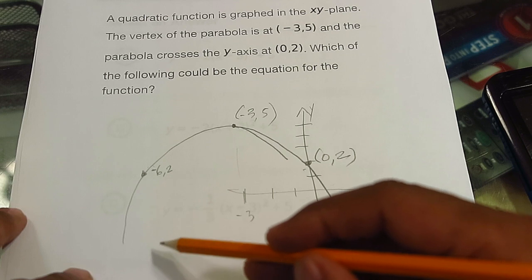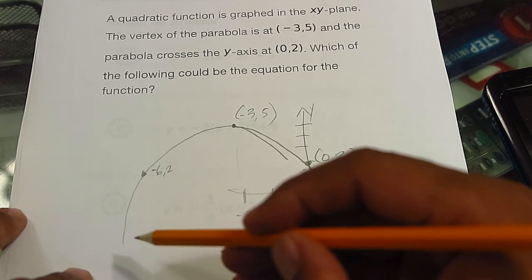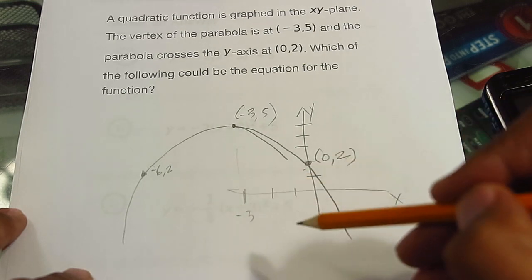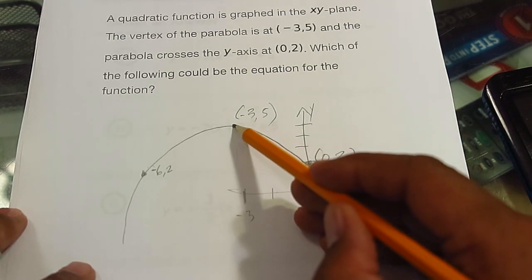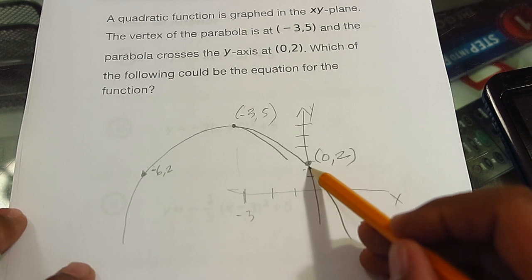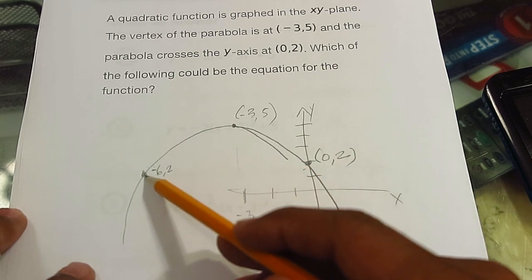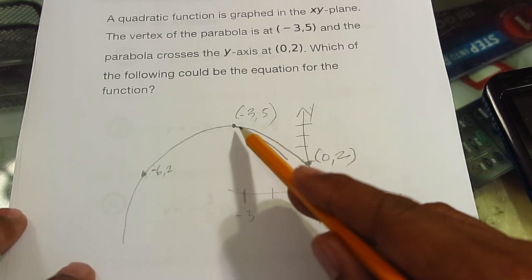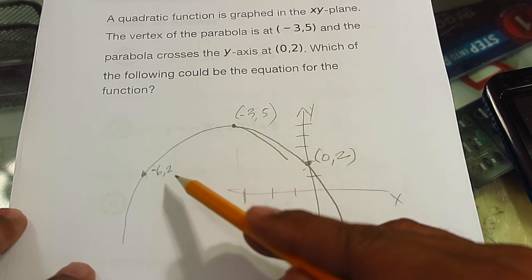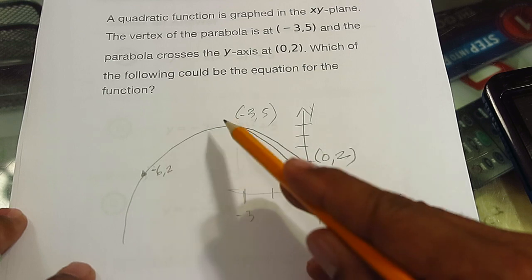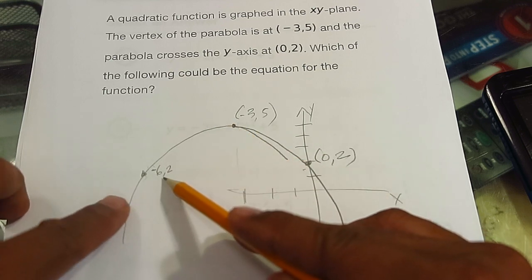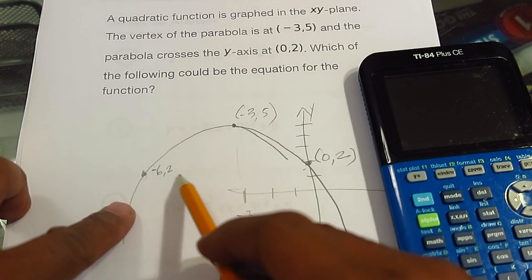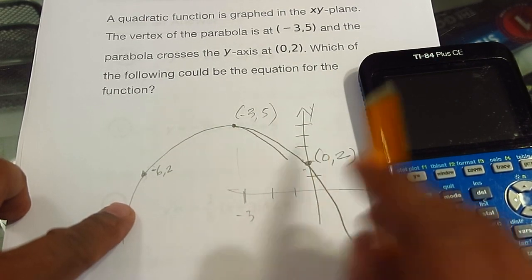Now that means that this has a negative leading coefficient because it's an inverted u. Because we know that this is the vertex and we have a point here, we can also find out by symmetry the other point. Since this point is 3 away from the vertex, if we go 3 to the left of the vertex, we can get the other point. Now that I have 3 points: negative 6, 2, negative 3, 5, and 0, 2.